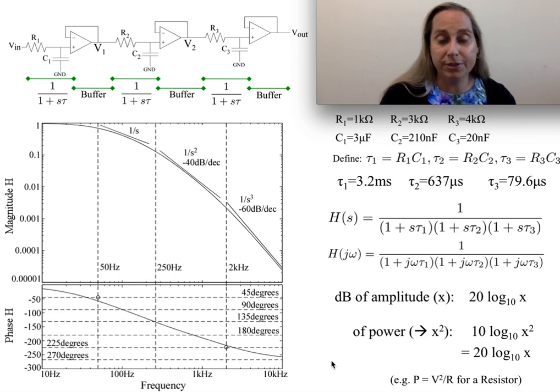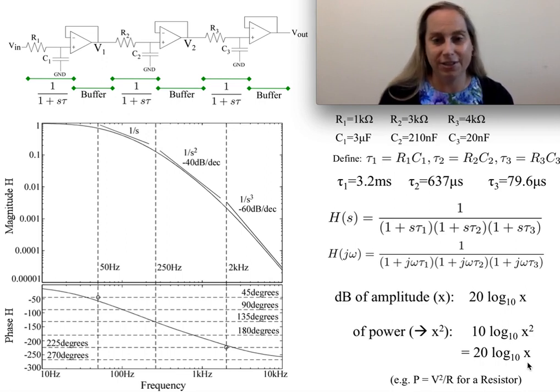And sometimes you'll see the discussions of magnitude done in dB, and that's 20 log 10 of x. Sometimes you'll also see dB done in terms of power, and that's usually 10 log 10 of x of the power, which is usually an x squared thing. So as a result, it's really 20 log 10 of x, so everything is consistent.